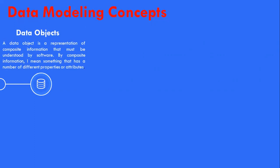A data object is a representation of composite information that must be understood by the software. A single value would not be a valid data object, but dimensions incorporating height, width, and depth could be defined as an object. A data object can be an external entity, a thing, an occurrence, an event, a role, an organizational unit, a place, or a structure. The description of the data object incorporates the data object and all of its attributes. The data object encapsulates data only — there is no reference within the data object to operations that act on the data.